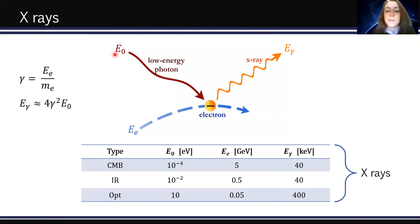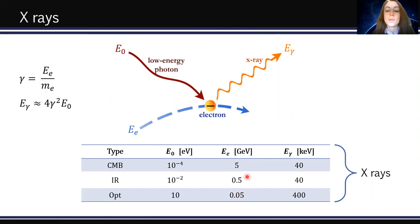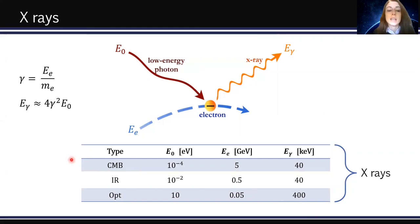For sub-GeV dark matter particles producing electrons at various energies: 5 GeV electrons interacting with a CMB photon via inverse Compton scattering produce a final photon with energy ~40 keV. For intermediate dark matter masses producing 0.5 GeV electrons, interaction with an infrared photon also produces ~40 keV photons. For lower dark matter masses producing 50 MeV electrons, scattering on optical starlight yields photons up to ~400 keV. After inverse Compton scattering, these low-energy radiation fields become hard X-rays and soft gamma rays — and importantly, this energy range is covered by the INTEGRAL data.